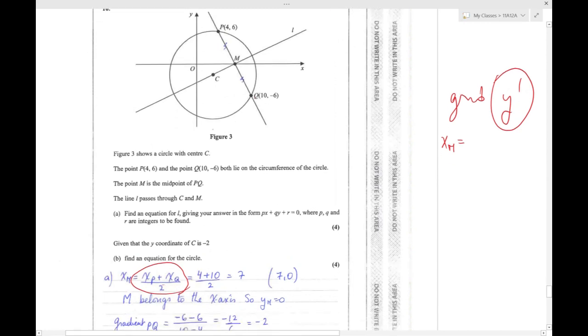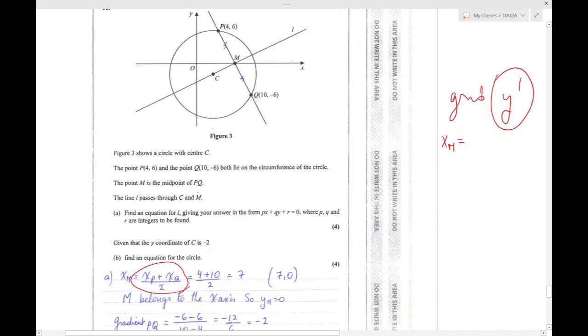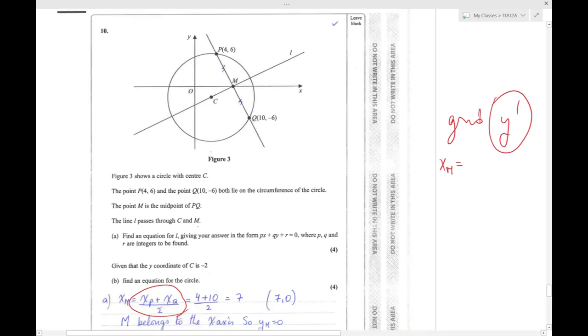The line L passes through C and M. When a line passes through the center of the circle and then through the midpoint of the chord, directly you should conclude that it is the perpendicular bisector. Again, when in a circle the line passes through the center and the midpoint of a chord, it means this line is the perpendicular bisector of the chord.